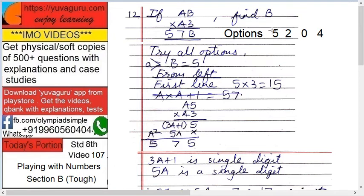Let's try with our first option 5. We'll try from left, so B maybe is 5. So 5 into 3 is 15. So again B is 5, that's okay, so 15, 1 goes up. Now what remains? So A into 5, into A3, sorry, A5 into A3. So it becomes what? 3A plus 1 into 5, because see this first 15, 1 goes up and A into 3 is 3A plus this one.